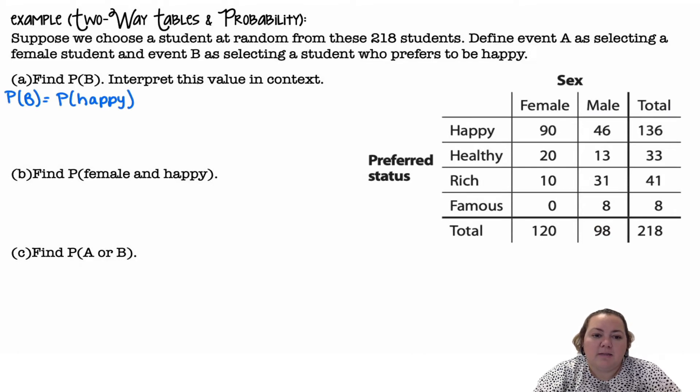Find the probability of B and interpret this value in context. So here's our table. Probability of B would be, B stands for happy. So the probability they prefer to be happy. And happy, the total for happy is 136.